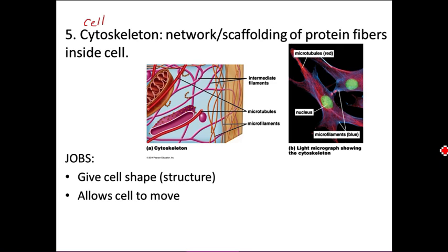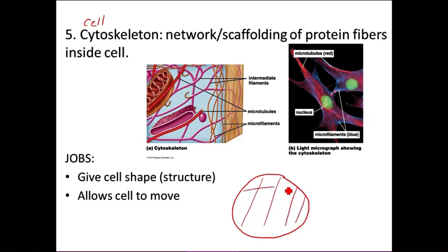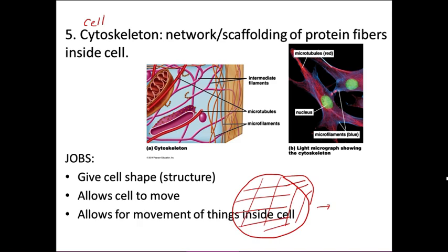The cytoskeleton gives the cell shape and pushes out the cell membrane along with the cytoplasm. It also allows the cell to move — the cell can push out its cytoskeleton in one direction to extend the cell membrane forward, while dismantling the cytoskeleton at the rear, causing the whole cell to crawl forward. It also allows for movement of things inside the cell using vesicles, which we'll discuss when we talk about eukaryotic organelles. It also guides cell division.